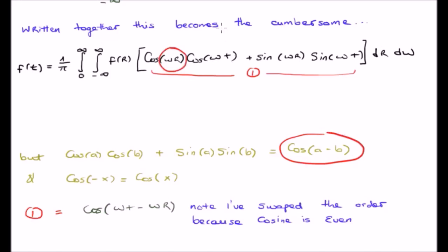Where a in this case is omega times R and B is omega times t. Furthermore, cosine, which we're now left with, is an even function satisfying the following relationship.